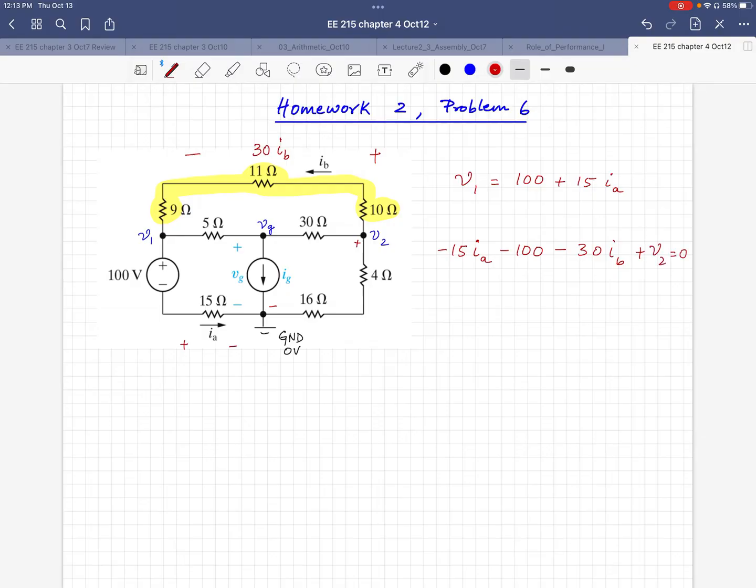And then if you know Ia and Ib, then you can find out V2. From the first equation, you can find out V1. So suppose we have these two as known quantities now.